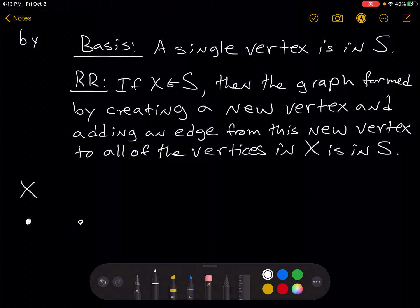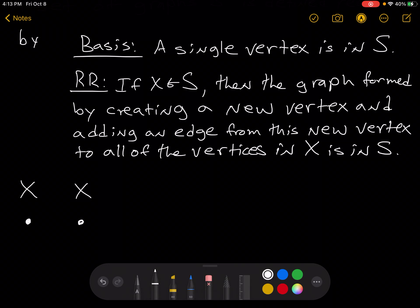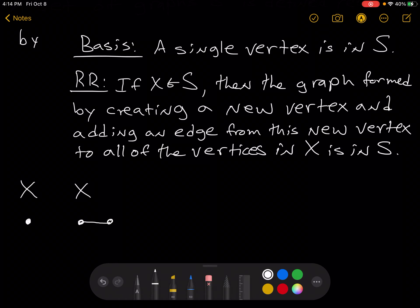So here we have, let me just draw X again. And so the recursive rule tells us that if we create a new vertex and connect it with an edge to everything in X, then this new graph is in S.